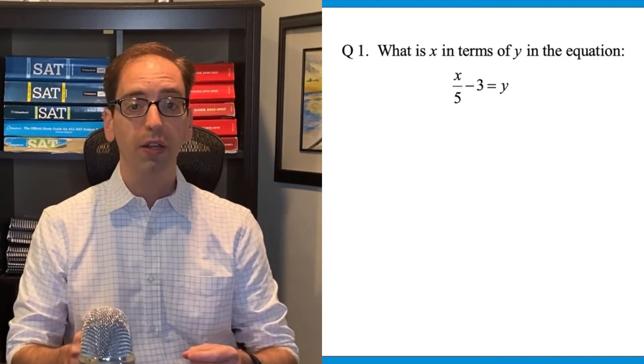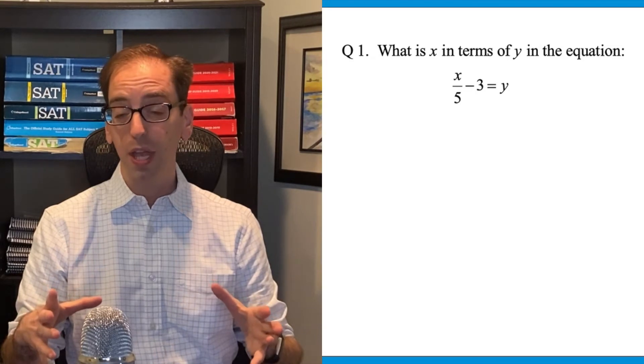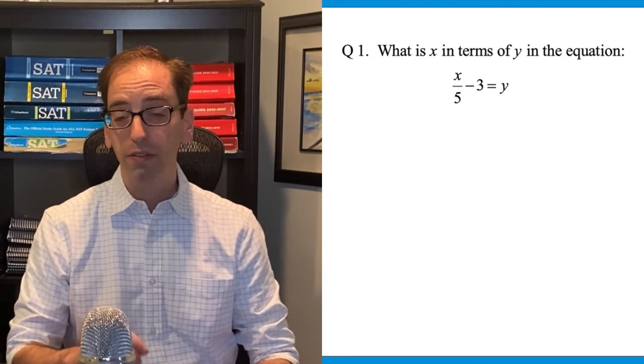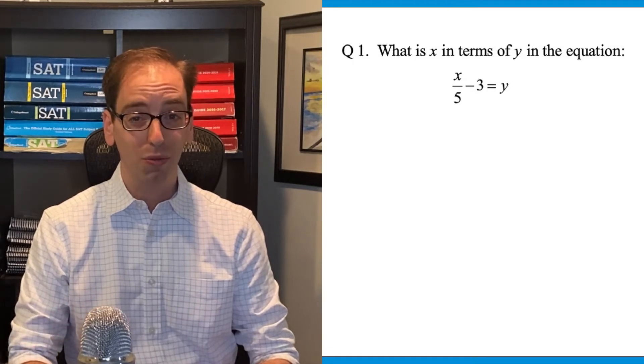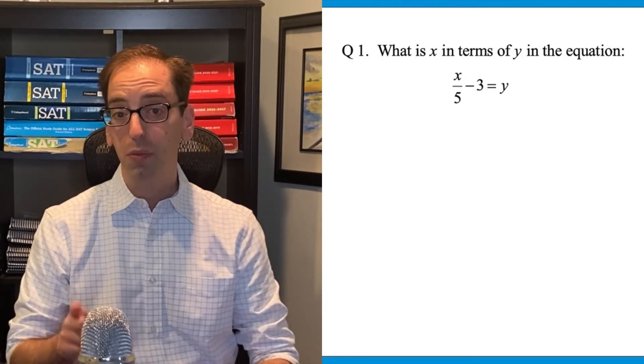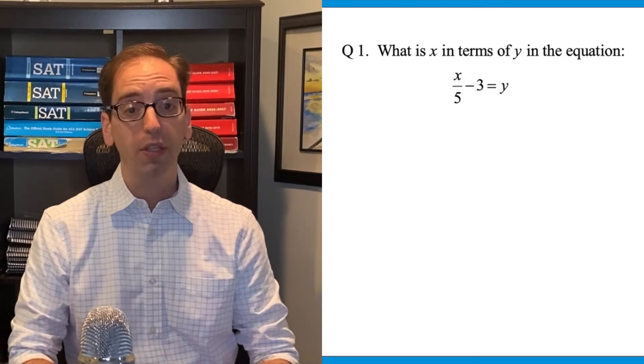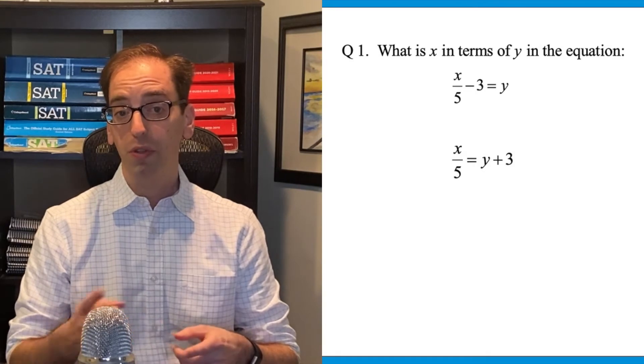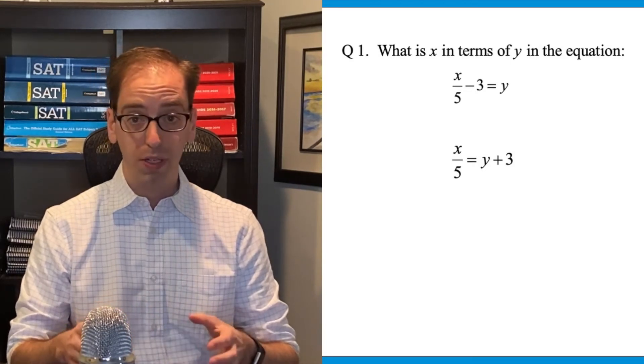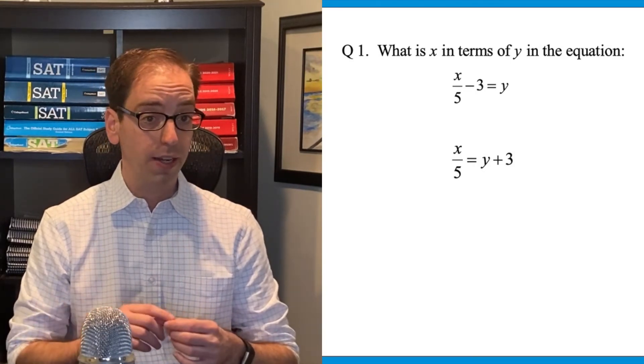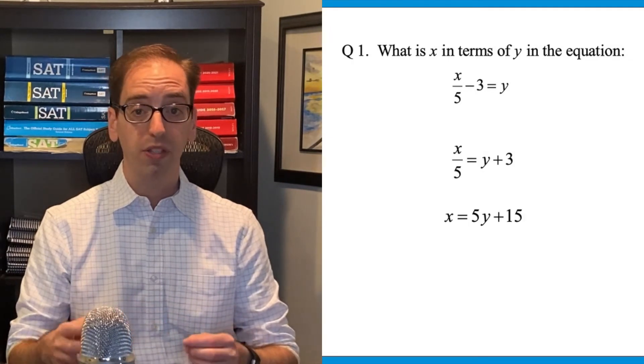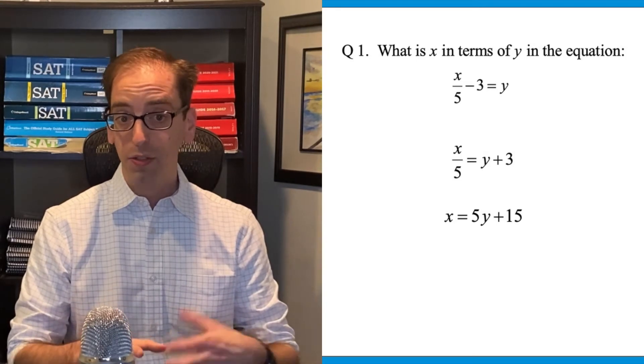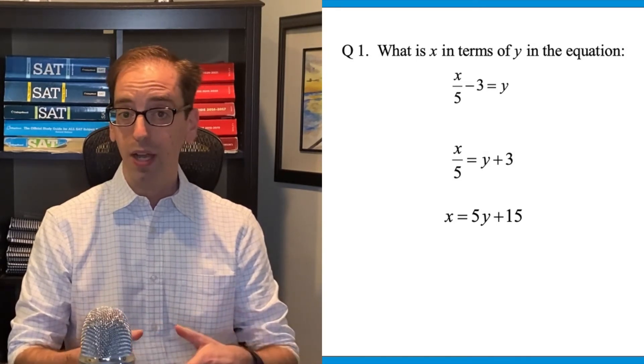In order to do that, you start as far away from the variable as possible, and then you get closer to it. So in other words, of the 3 and the 5, the first thing we'd want to move is the 3. So using inverse operations, we would add it to the other side. That would give us x over 5 equals y plus 3. And then again, inverse operations. We're dividing by 5 now. So to get rid of it, we'd multiply it to the other side. That would give us x equals 5y plus 15. That's x in terms of y. It means to get x all alone.